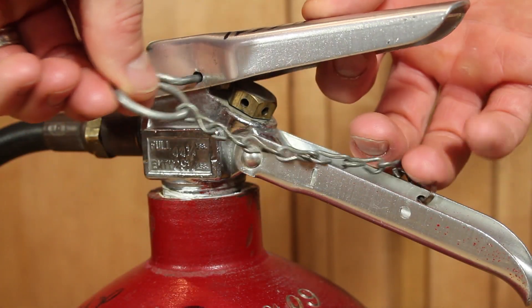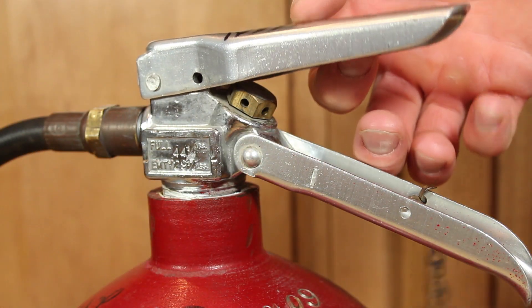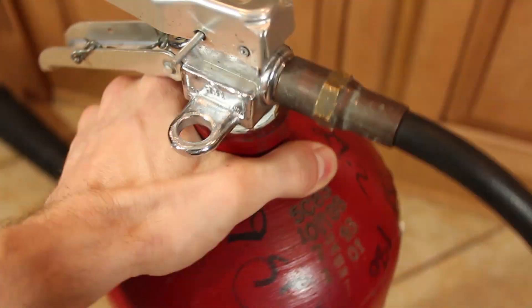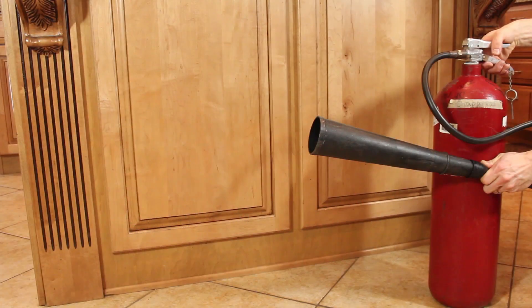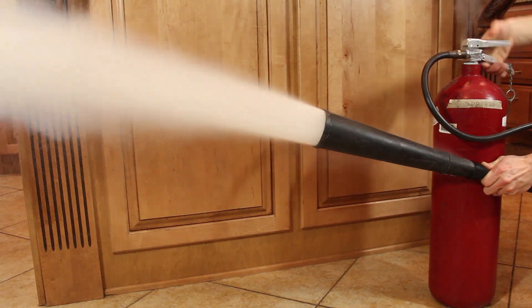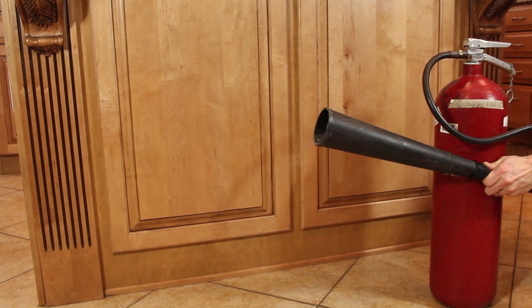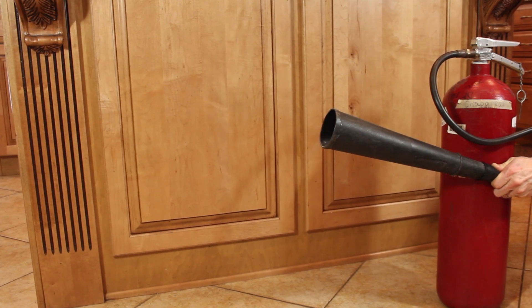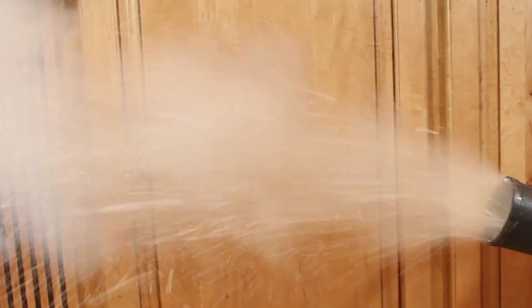The operation is pretty simple, just remove the locking pin from the handle and squeeze down when ready. The tank is full of liquid CO2, but it comes shooting out as a gas and little chunks of dry ice snow. All the residue quickly evaporates leaving everything as clean as when you started. It just makes it a little harder to breathe.